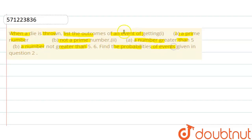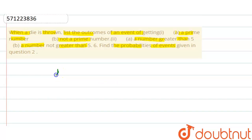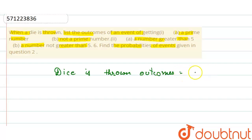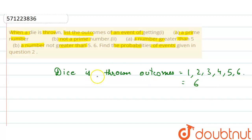We have to find the possibilities of the event — that is, the number of outcomes from these conditions. As we know, when a dice is thrown, the possible outcomes are 1, 2, 3, 4, 5, and 6. So the total number of outcomes is 6 when a dice is thrown.